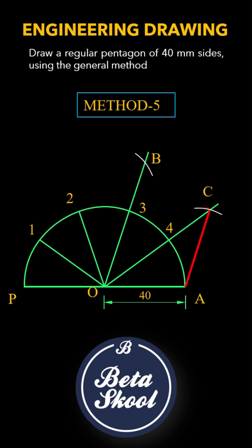Now comes the magic: connect A, C, B, 2, O, and A, and that's it. We've successfully constructed a regular pentagon using another simple method called the general method.